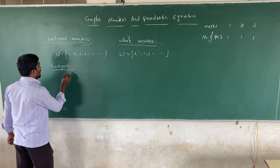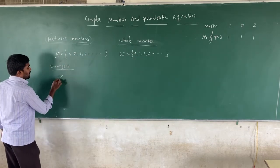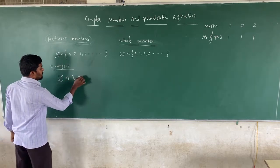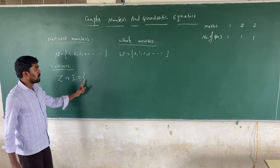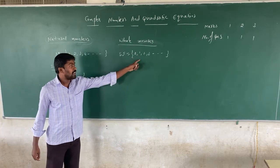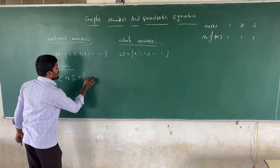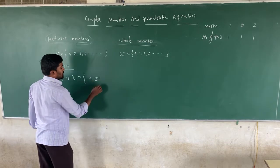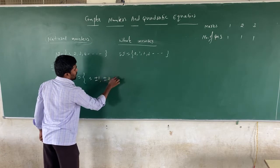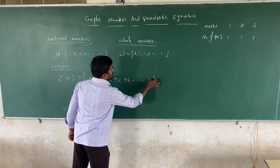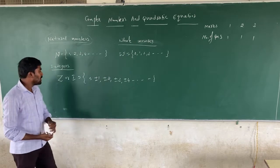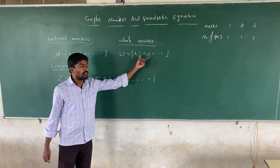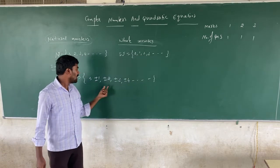The set of all integers is denoted by Z or I. Integers are the set of all whole numbers and their negatives, including 0. For example: plus or minus 1, plus or minus 2, plus or minus 3, plus or minus 4, and so on.